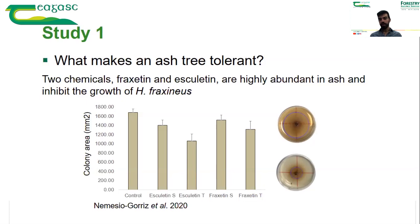On two petri dishes where we grew the fungus, a blue circle indicates how much the fungus has grown after two weeks. The top petri dish shows normal fungal growth in a medium with just sugars. The bottom plate shows what happens when these coumarins are added to the medium — the fungus has grown much less, demonstrating that coumarins inhibit fungal growth. A tree with more of these coumarins will be able to resist the disease better.